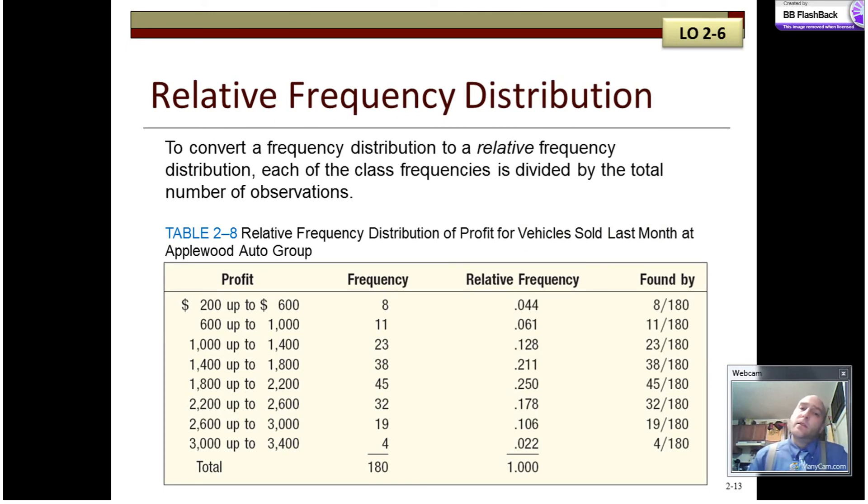There's other types of frequency distributions that don't give you just specific counts. We see here our frequency for each of these classes is no different than we talked about before. But if we want to convert a frequency distribution into a relative frequency distribution, we take each of the class frequencies and divide by the total number of observations. So 8 divided by a total of 180 would give a relative frequency of around 4%, 0.044. And that's the relative frequency of occurrences in this class. It doesn't occur very frequently. However, right here between 1800 and 2200, we see 0.25. That relative frequency occurs most frequently and it is our modal relative frequency.